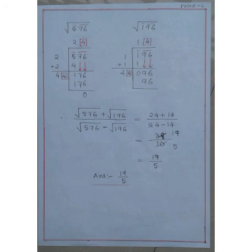24 minus 14 is 10. If we simplify this fraction, we get 19 by 5.